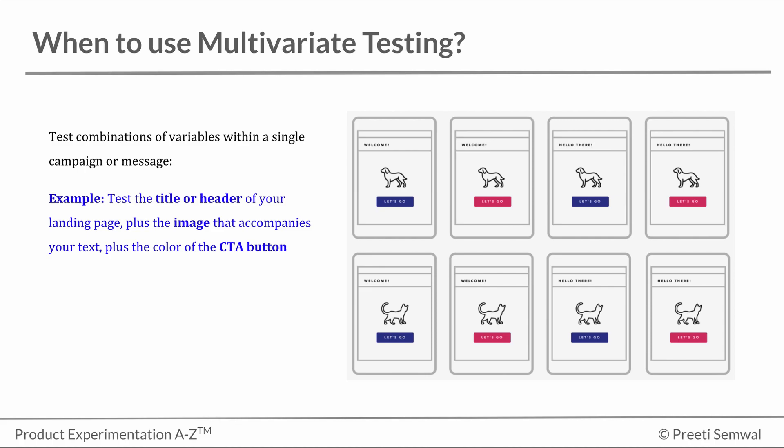You might want to test two different header texts, two different images, and two different colors for the CTA text. To run a multivariate test on this page, you would funnel visitors to all possible combinations of these elements.